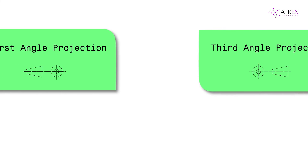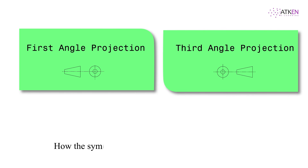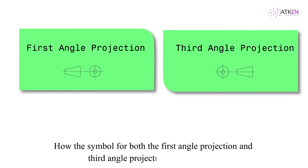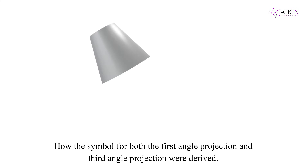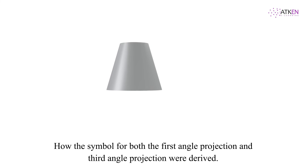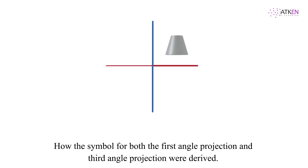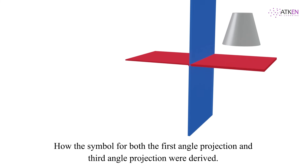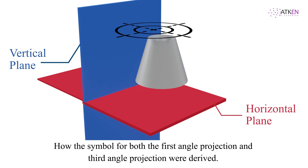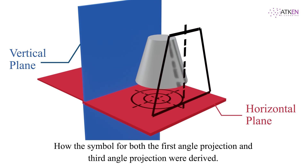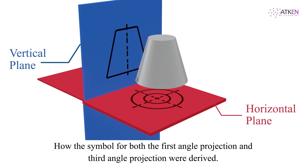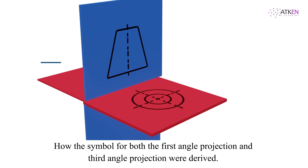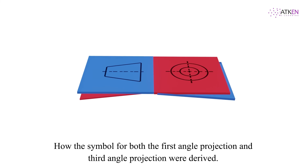Now let's see how the symbol for both the first angle projection and third angle projection were derived. These symbols are nothing but the projection views of a truncated cone of suitable dimension. For first angle projection, the object is in the first quadrant. The front view is projected onto the vertical plane and the top view is projected onto the horizontal plane. If the projections are unfolded and rotated, it forms the symbol for first angle projection.